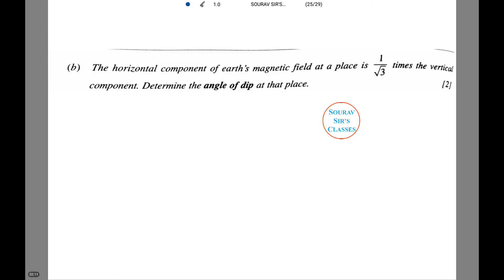The horizontal component of the earth's magnetic field at a place is 1 by root 3 times the vertical component. We need to measure the angle of dip. Therefore the angle of dip is equal to tan theta.